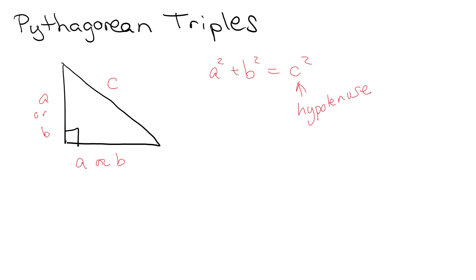So we have a squared plus b squared equals c squared. Now there are some integers that fit really well into the idea of this a squared plus b squared equals c squared.